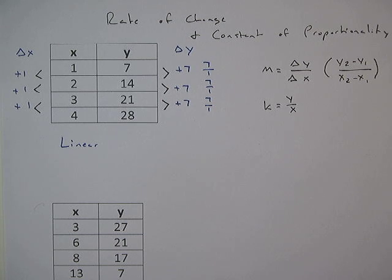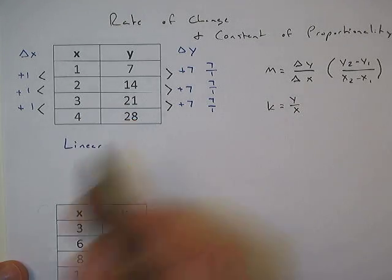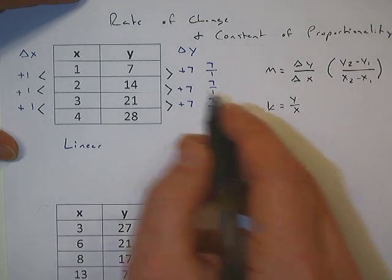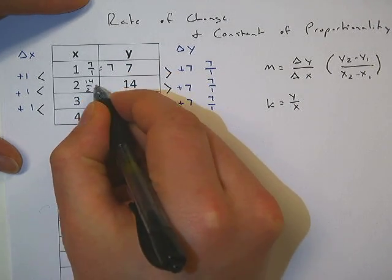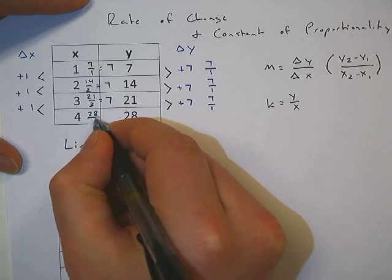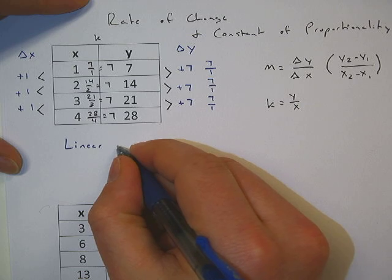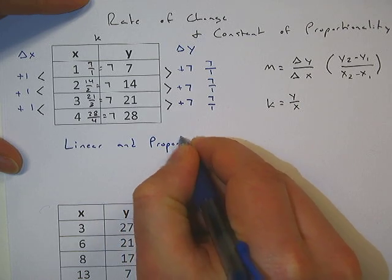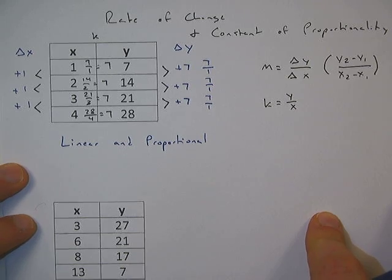Now if we also want to tell if it's proportional or not, just to remind you the criteria to be proportional: a function has to be both linear and it has to pass through the origin. Well this table doesn't tell us if it passes through the origin. So what we can do now is instead of using the rate of change we're going to use the numbers given to us and calculate the constant of proportionality for each point inside the table. So y over x for here is going to be 7 over 1 which equals 7. Then 14 divided by 2 equals 7. Then 21 divided by 3 equals 7. And 28 divided by 4 equals 7. Because our k value is the same all the way down we can now say that this relationship is linear and proportional. Not only is it a straight line but we know that its y-intercept will be the origin at 0, 0.